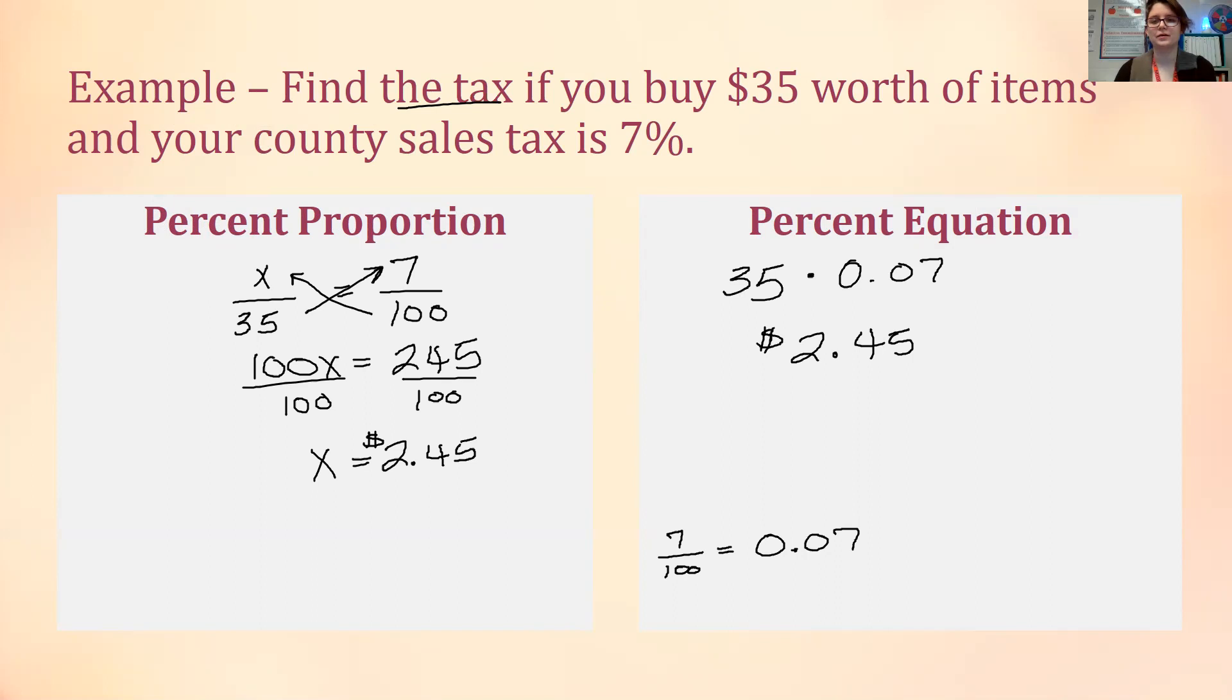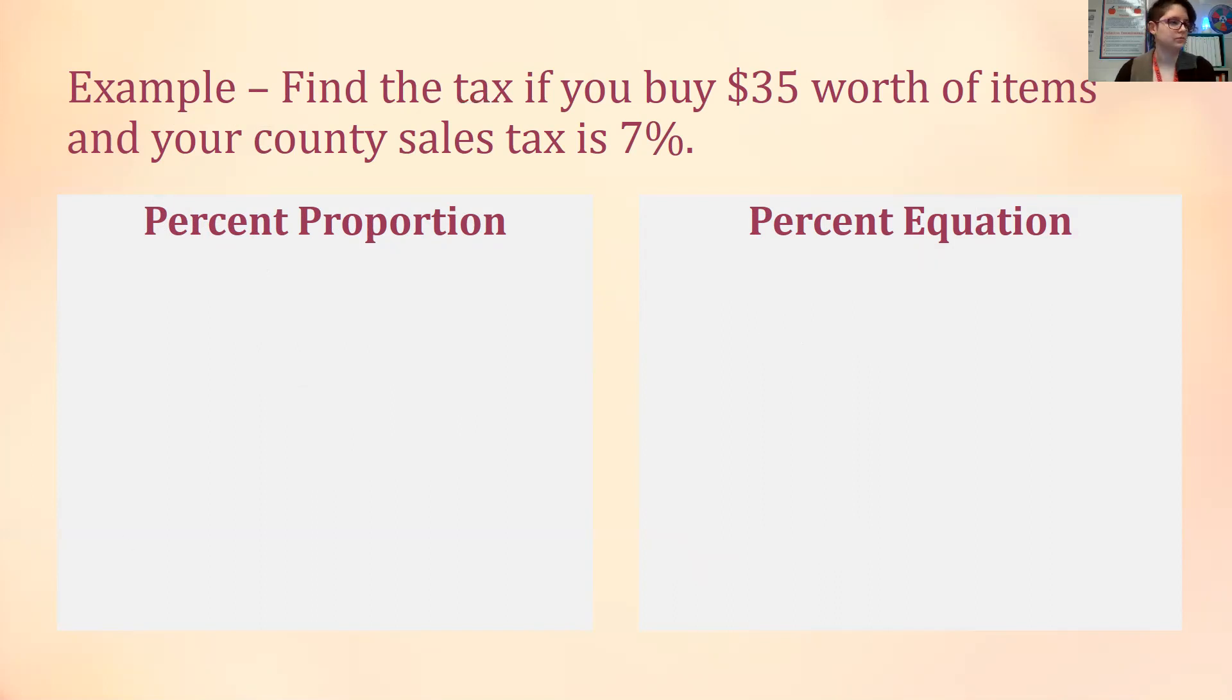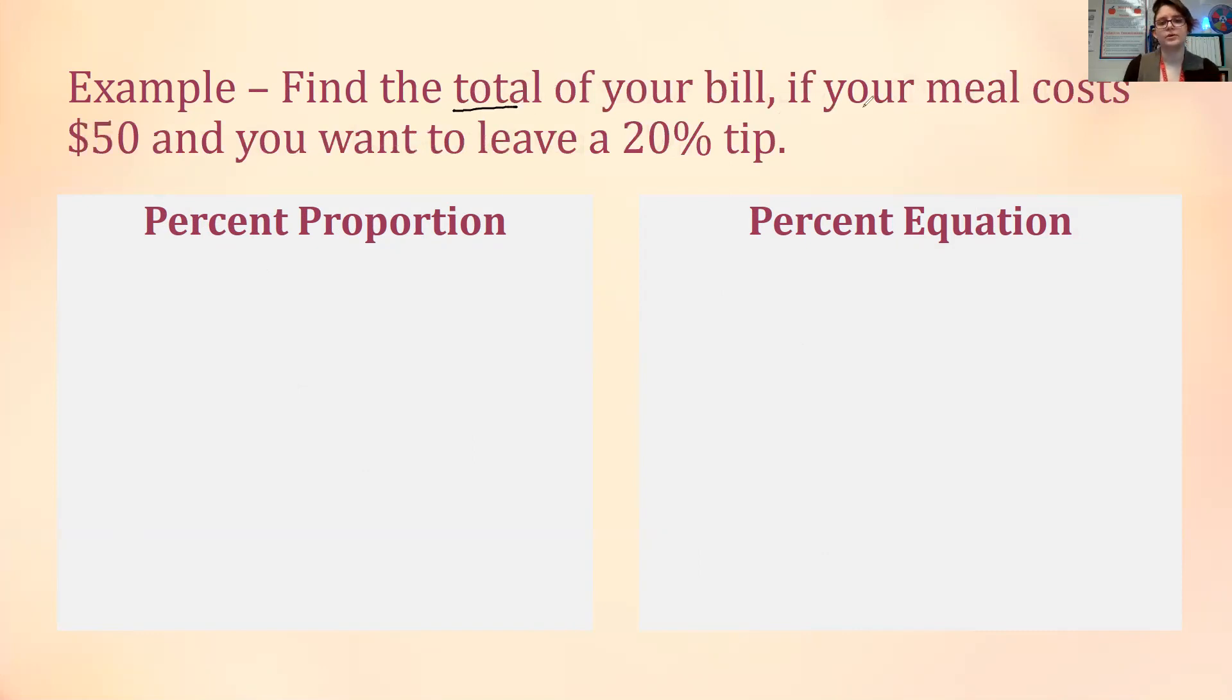Let's look at another example. This one says find the total of your bill if your meal costs $50 and you want to leave a 20% tip. So we're looking for the total. For this one with our percent proportion we're going to have to add at the end. With our proportion we'll find the tip, but we want the total and we can only do that by adding the tip to the original amount.